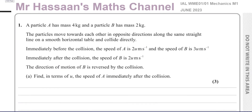Question number one is about momentum and impulse. You have particle A with a mass of 4 kilograms, and particle B with a mass of 2 kilograms. The particles move towards each other in opposite directions along the same straight line on a smooth horizontal table and they collide directly. Immediately before the collision, the speed of A is 2u meters per second and the speed of B is 3u meters per second. Immediately after the collision, the speed of B is 2u meters per second and the direction of motion of B is reversed. Find in terms of u the speed of A immediately after the collision.